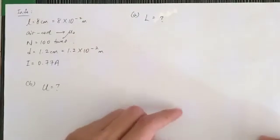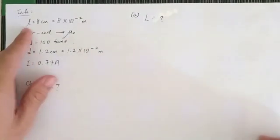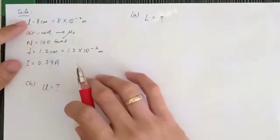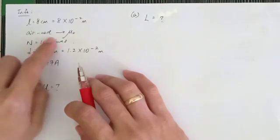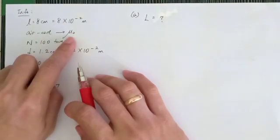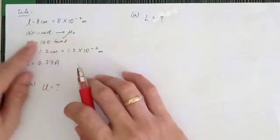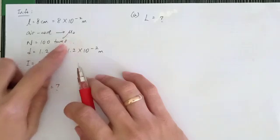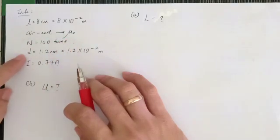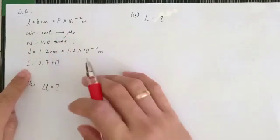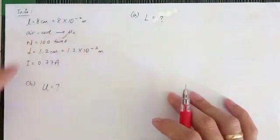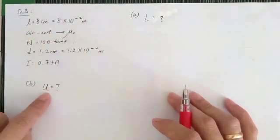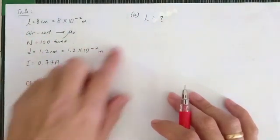Alright, so the information given: the length, it's an air core so we use mu naught instead of mu, the number of turns, the diameter, and the current. Question A asks about self-inductance and question B asks about energy stored.